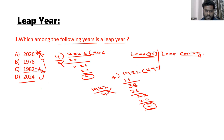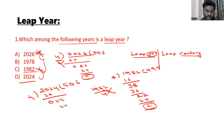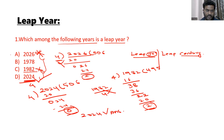Now consider 2024. Divide 2024 by 4: 4×5=20, remainder 0; bring down 24, 4×6=24, remainder 0. So 2024 is divisible by 4, therefore 2024 is a leap year. That is the answer. This is the first category of the leap year.